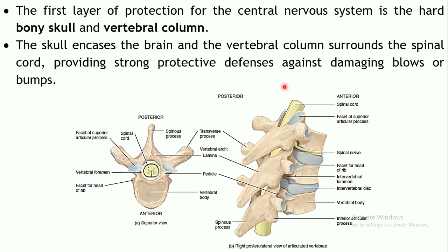The meninges help prevent any kind of shock or damage to the spinal cord. The first layer of protection for the CNS is the bony skull protecting the brain, and the vertebral column protecting the spinal cord. The vertebral column is composed of various vertebrae stacked one above the other — cervical, thoracic, and lumbar vertebrae — surrounding the spinal cord. The brain is protected by the skull and the vertebral column surrounds the spinal cord, protecting it against damaging blows or bumps.